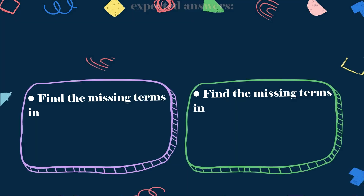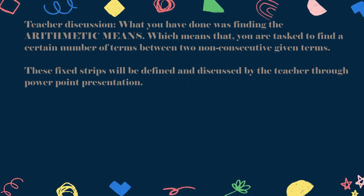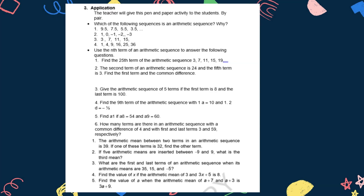Got it? Next round. Correct! What you have done was finding the arithmetic means. Arithmetic means are the terms you are tasked to find — a certain number of terms between two non-consecutive arithmetic terms.